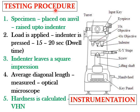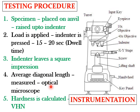The testing procedure for Vickers hardness: place the specimen on the anvil and raise it up to the indenter. A known load is applied from the top surface. The indenter is pressed for nearly 10 to 20 seconds, a period called the dwell time. The indenter leaves a square impression, and the average diagonal length of the impression is measured with the help of an optical microscope. Knowing the applied load and the diagonal length, the hardness is calculated from the Vickers hardness number.